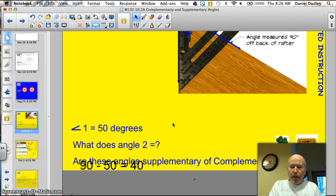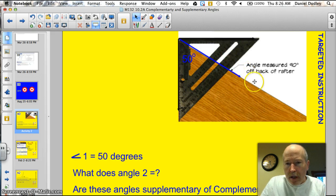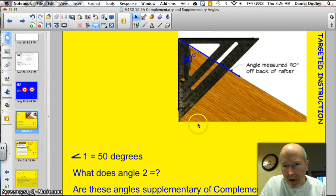Alright, here's the question right here. Take a look here. I got my math all set up for you. Here's a board from a roof. And I took and put a square on there. And I know that this angle here is 50 degrees right here.